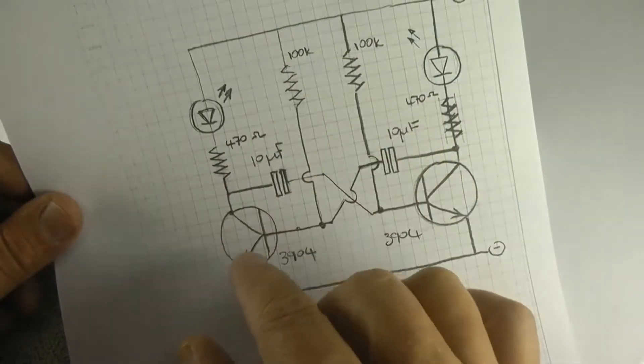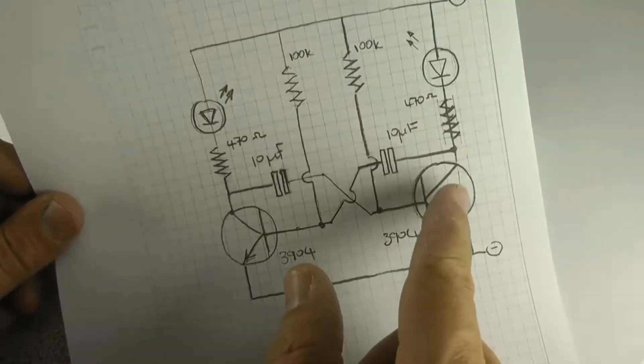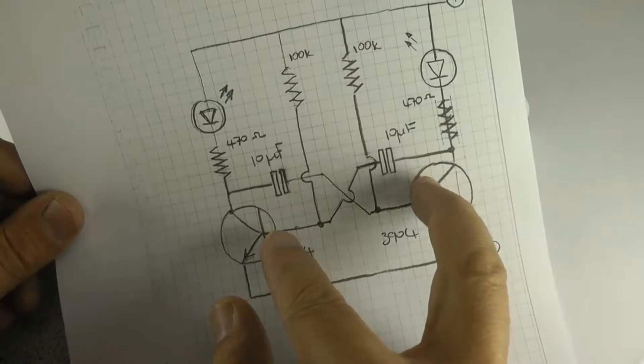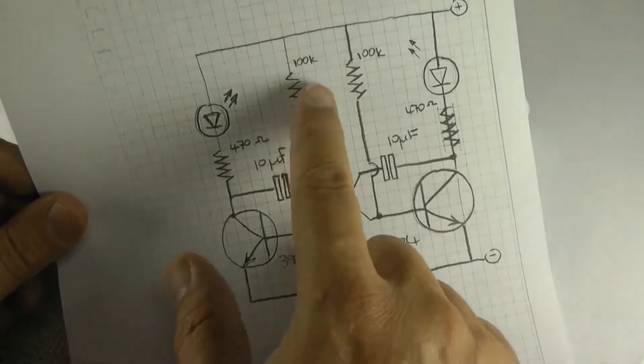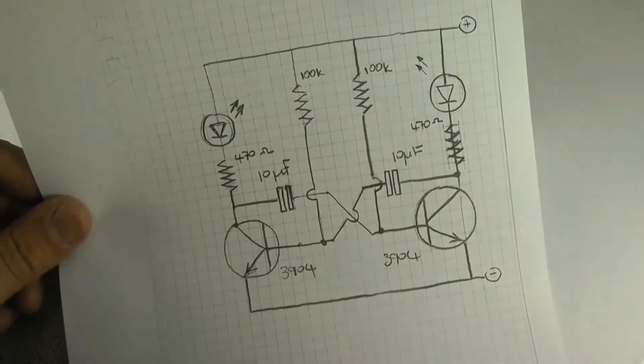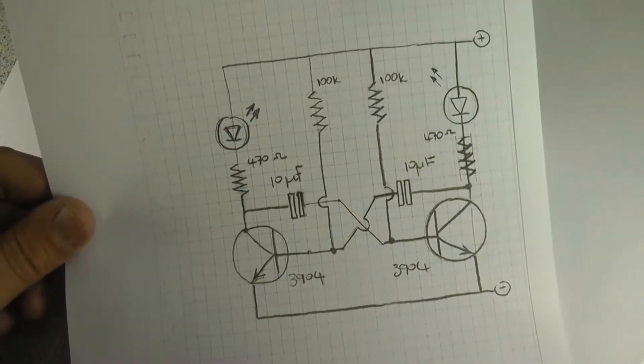We're not going to explain how the circuit works, but suffice it to say that it starts up and then this transistor and this transistor switch each other off and on by charging and discharging through these resistors and capacitors here to light up the LEDs there. So that's all the theory we're going to get involved with this time round.